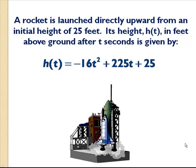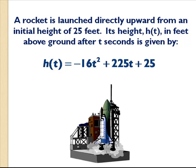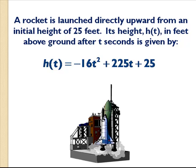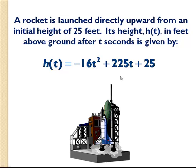Good afternoon folks. In this lesson we're going to answer two more questions pertaining to our rocket problem. Just to review the setup: we have a rocket that's launched directly upward from an initial height of 25 feet. Its height h(t) in feet above the ground after t seconds is given by the following equation.